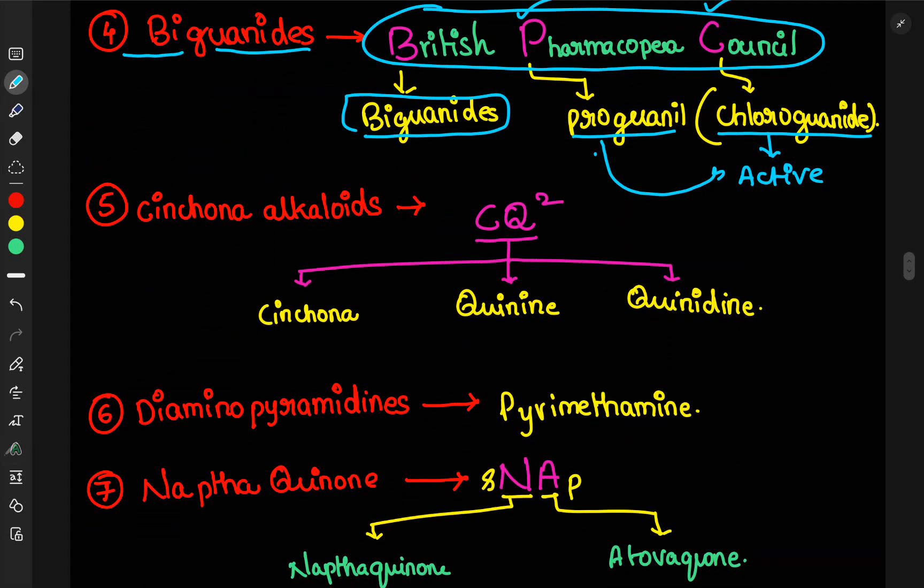Next, fifth one, cinchona alkaloids. Here, you remember the C-square. Sorry, CQ-square. In this, C represents the cinchona. You will easily remember the quinine and quinidine.